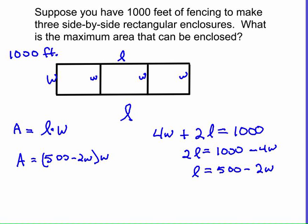On the right-hand side we see the length is 500 minus 2w. Substituting in gives us our area formula. Distributing the w: 500w minus 2w squared. We now have an area formula that we can use in our graphing calculator to find the maximum area.